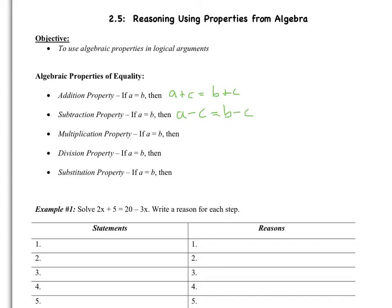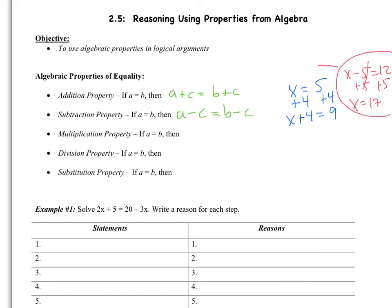Looking at an example: if I have X equals 5, using the addition property I'm allowed to add 4 to both sides, so X plus 4 equals 9. The way you're going to see this is an equation such as X minus 5 equals 12 — you're going to add 5 to both sides and get X equals 17. But now you know why this is true.